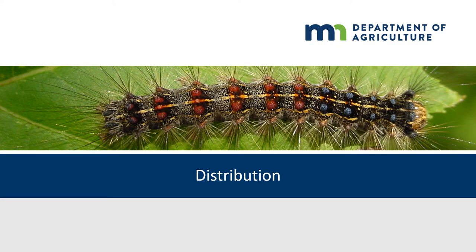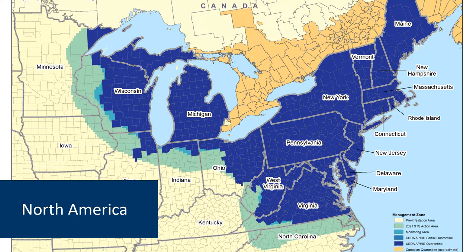Next, let's talk about the distribution of Gypsy Moth. Here's an image of where the Gypsy Moth quarantine currently is. The Gypsy Moth was brought into the United States in the late 1800s by a scientist looking to breed silk moths. This moth escaped the area and has slowly been spreading across the country for the last 150 years. The dark blue is areas currently quarantined for Gypsy Moth. The light green on that leading edge is areas of an action area with the Slow the Spread program, where we actively control and eradicate Gypsy Moth populations from continuing.